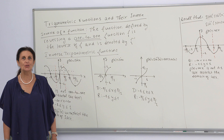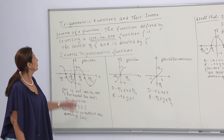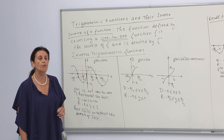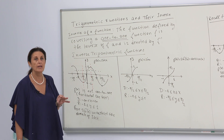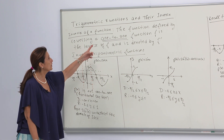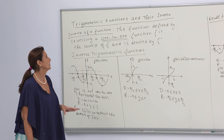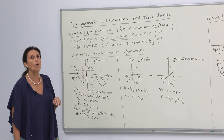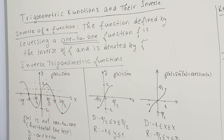Hi everybody. Today our video will be about the trigonometric functions and their inverse. But first of all, I want to remind you what is the definition of inverse function. The function defined by reversing a one-to-one function is the inverse of the function and is denoted by f⁻¹.